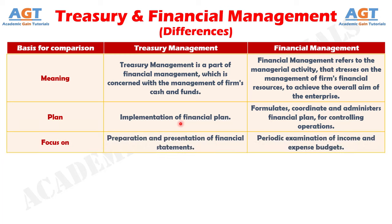Number 3: the main objective of Financial Management is regular monitoring of income and expense budgets. On the contrary, Treasury Management focuses on preparation and presentation of financial statements.